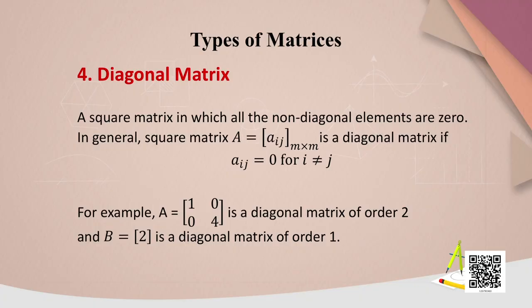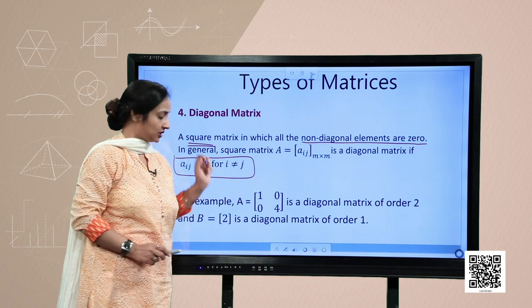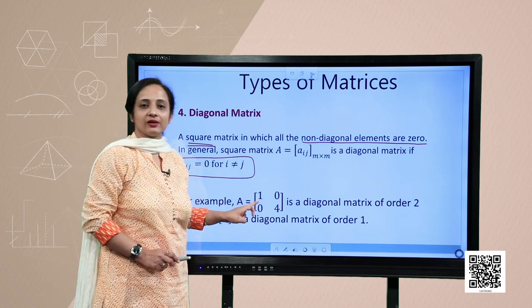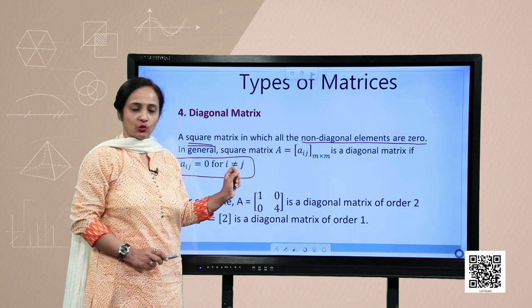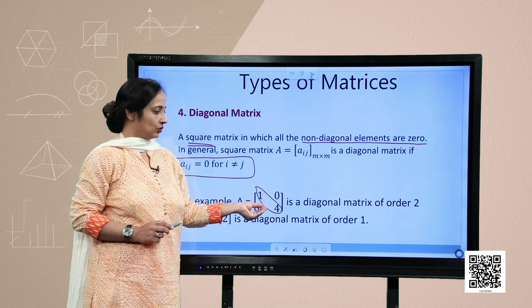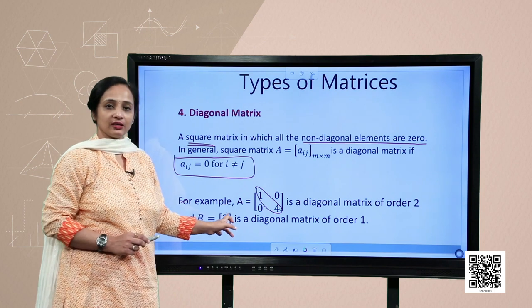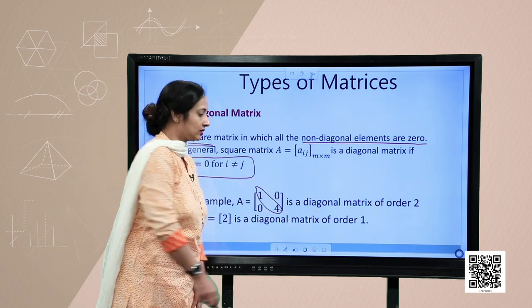The next type of matrix is the diagonal matrix. It is a square matrix in which all the non-diagonal elements are 0. In general, a square matrix A = [a_ij]_{m×m} is a diagonal matrix if a_ij = 0 for all i ≠ j. For example, the matrix [[1, 0], [0, 4]] has diagonal elements 1 and 4 and non-diagonal elements 0, so it is a diagonal matrix of order 2. Similarly, a matrix consisting of the single element 2 is a diagonal matrix of order 1.